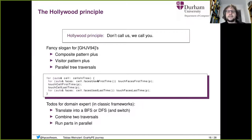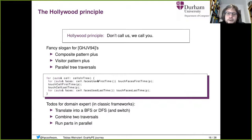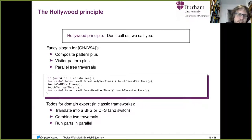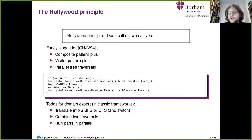The fundamental idea of how we got things right was to introduce the Hollywood principle — a fancy slogan for the Gamma, Helm, Johnson, Vlissides thing combining a composite pattern plus a visitor pattern plus a parallel tree traversal. Rather than forcing the user to write for loops and do stuff, we do all of that, and then call back the user and say: now we have a cell — what shall we do? Now we have a face — what shall we do? The user has no control anymore over how we run through data structures or how we schedule things.